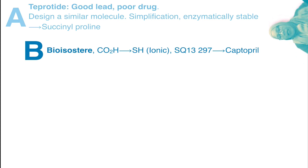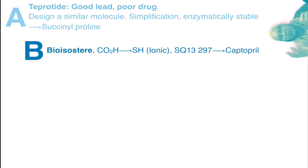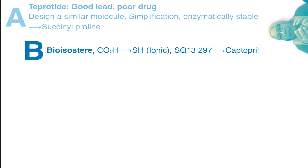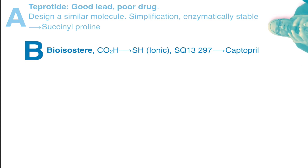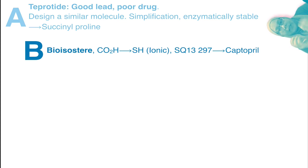The carboxylic acid in succinylproline is then changed to a thio group. Both will give a similar ionic interaction with zinc. The problem with carboxylic acid is that once in the body, it poses a bioavailability problem. So once they changed the carboxylic acid to a thio group, the oral bioavailability of the molecule improved further.